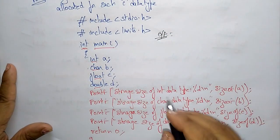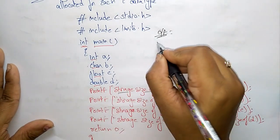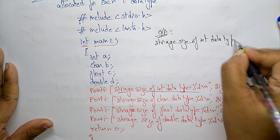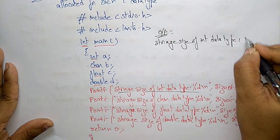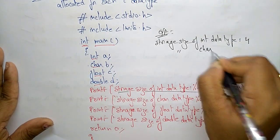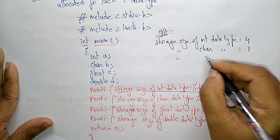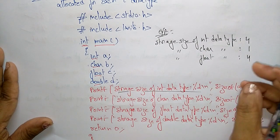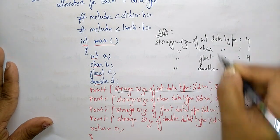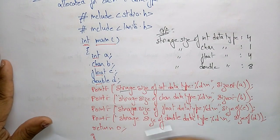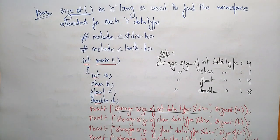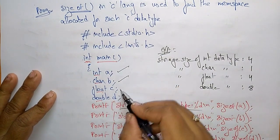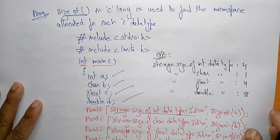The output is: storage size of int data type is 4 bytes. Storage size of character data type is 1. Storage size of float data type is 4. And the storage size of double data type is 8 bytes. So this program shows how to print the memory space allocated for each data type: int = 4 bytes, char = 1 byte, float = 4 bytes, and double = 8 bytes. This is about the primitive data types.